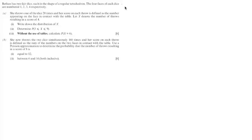Bethan has two fair dice, each in the shape of a regular tetrahedron. The four faces of each die are numbered 1, 2, 3, 4 respectively. Part A: She throws one of the dice 20 times, and a score on each throw is defined as the number appearing on the face in contact with the table. Let X denote the number of throws resulting in a score of 4. Part I asks us to write down the distribution of X.